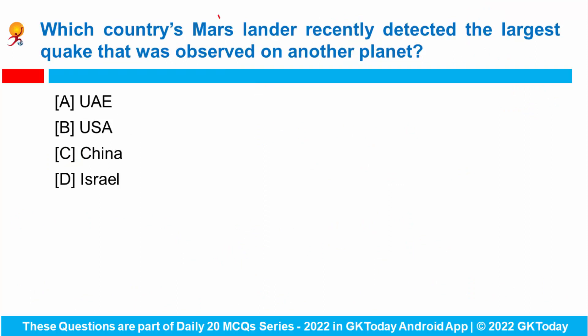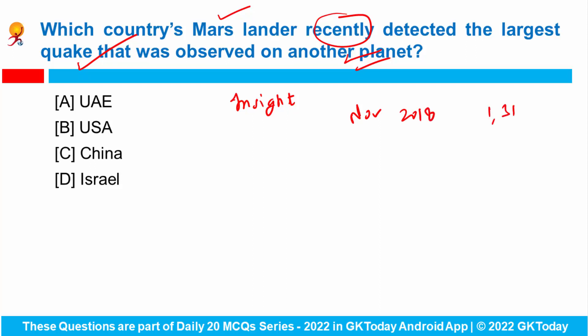Which country's Mars lander recently detected the largest quake ever observed on another planet? NASA's InSight Mars lander detected the largest quake ever observed on another planet. The rover landed on Mars in November 2018 and has heard nearly 1,313 quakes so far, of which the largest Mars quake was detected in August 2021. On Earth, quakes are caused by the shift in tectonic plates, but Mars does not have tectonic plates — its crust is a giant single plate.